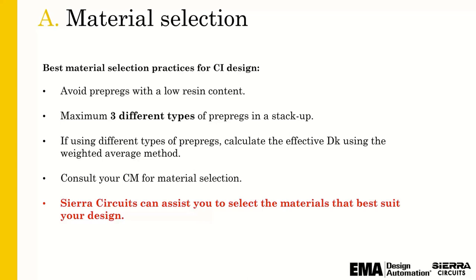This matters not just for modeling but also for manufacturing. If you're using different types of prepregs, the effective Dk can be calculated using a weighted average method. In our tool, however, we use a more sophisticated calculation using Maxwell's equations and where those junctions appear.